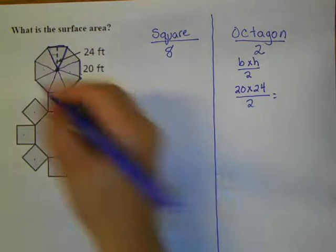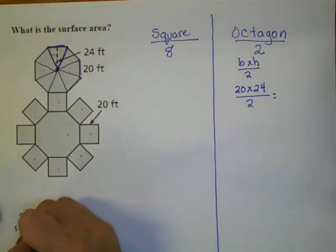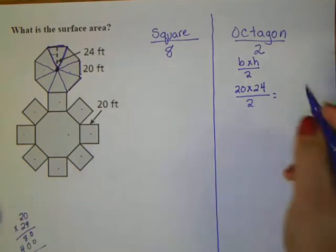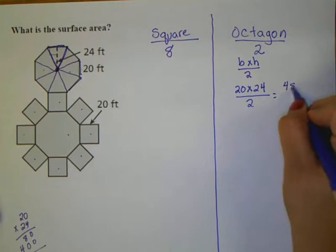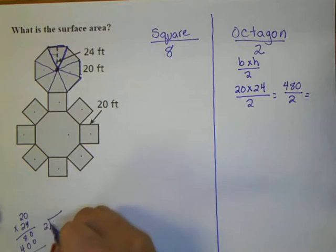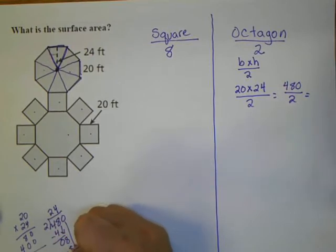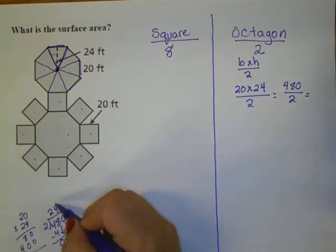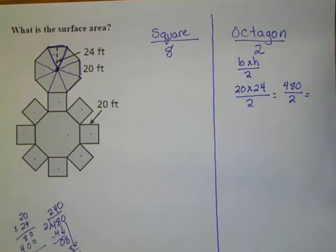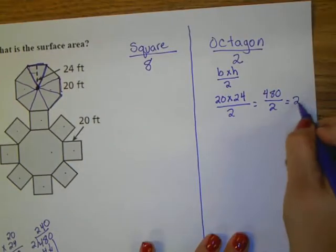Now I'm going to multiply these numbers and divide by two. So I can do a little helper problem, and when I do that I want to do it off to the side, so maybe over here: 20 times 24, so that gives me 480. Don't forget to divide by two.